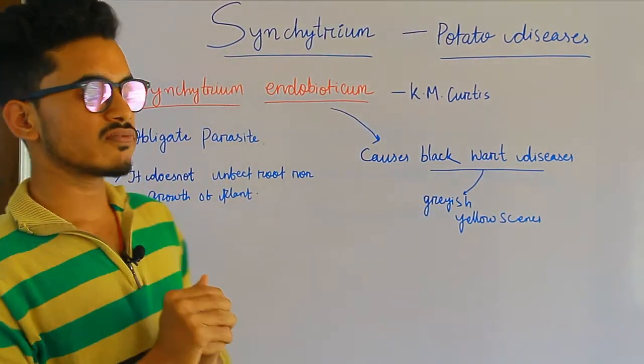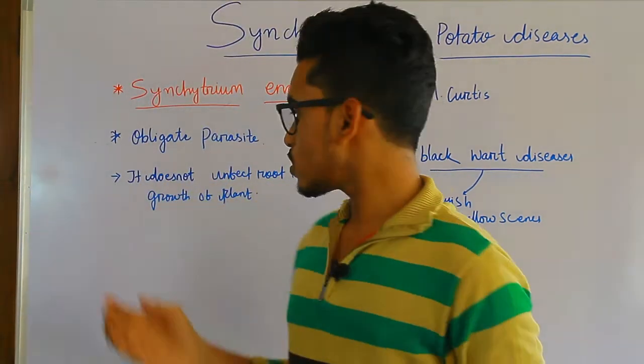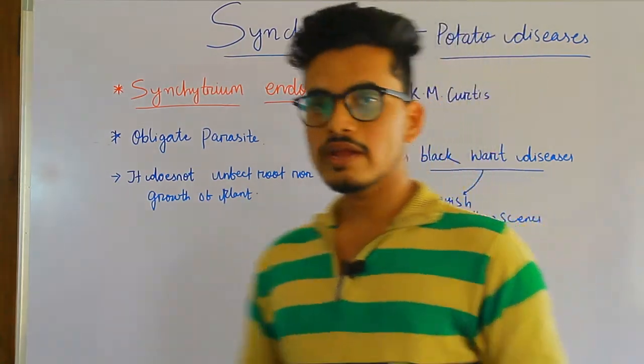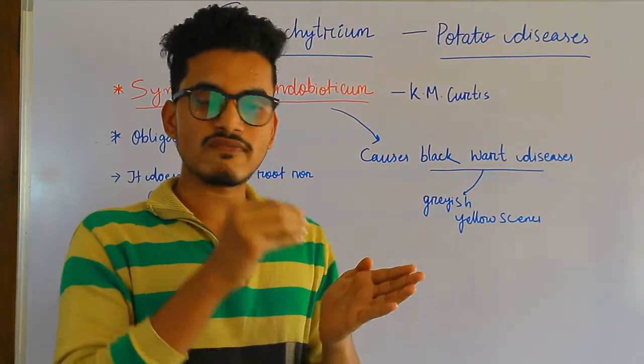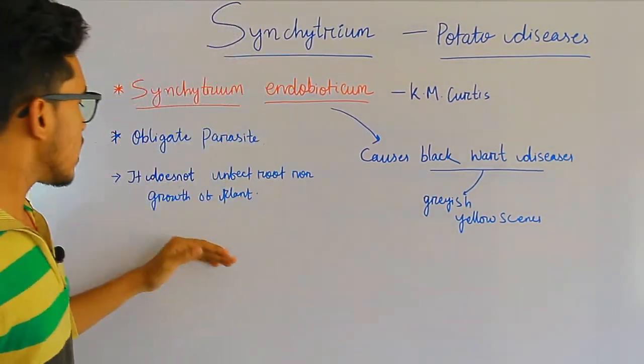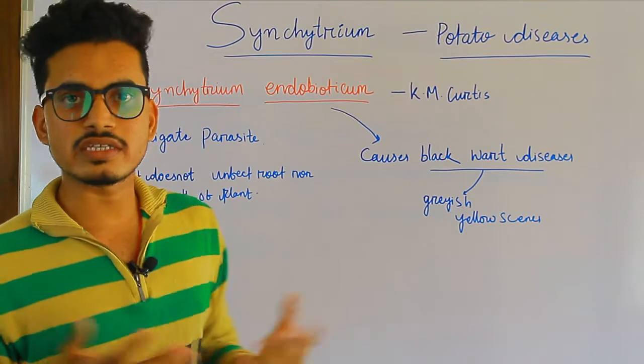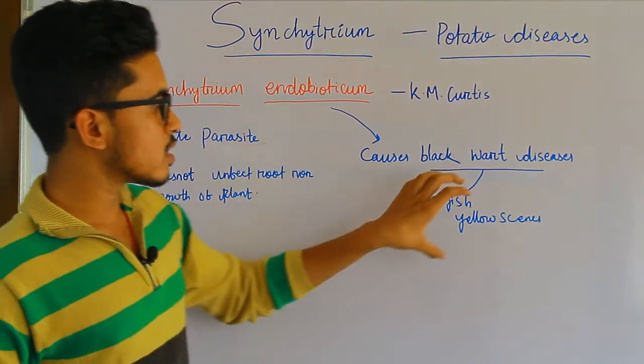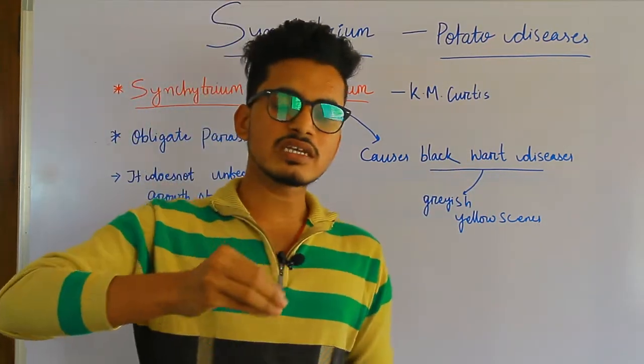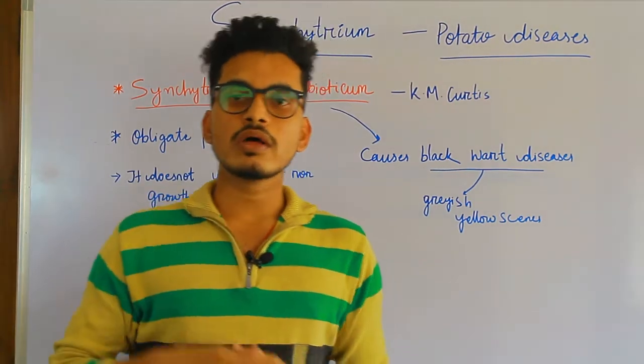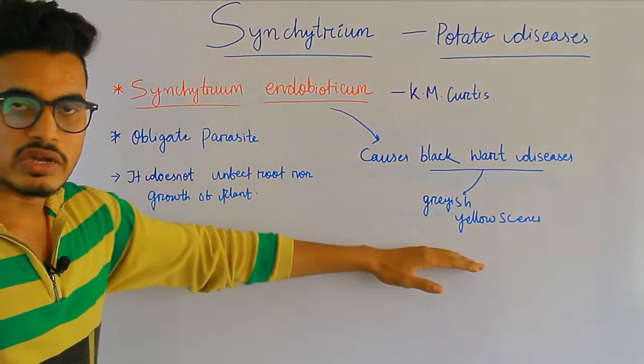It does not infect the root nor the growth of a plant. It doesn't affect the growth of the potato plant or the root. What it does is form gray and yellow lesions in the potato, making the potatoes not saleable due to these gray and yellow lesions.